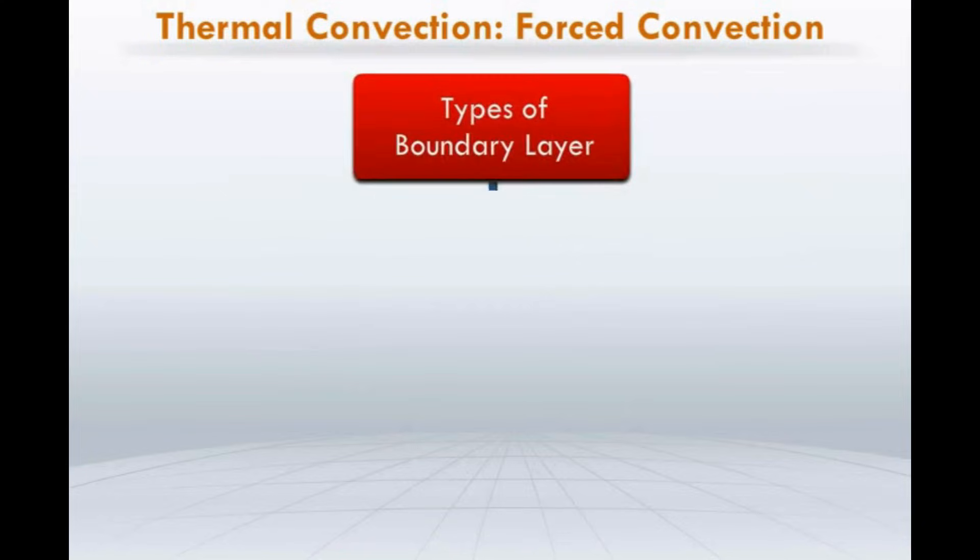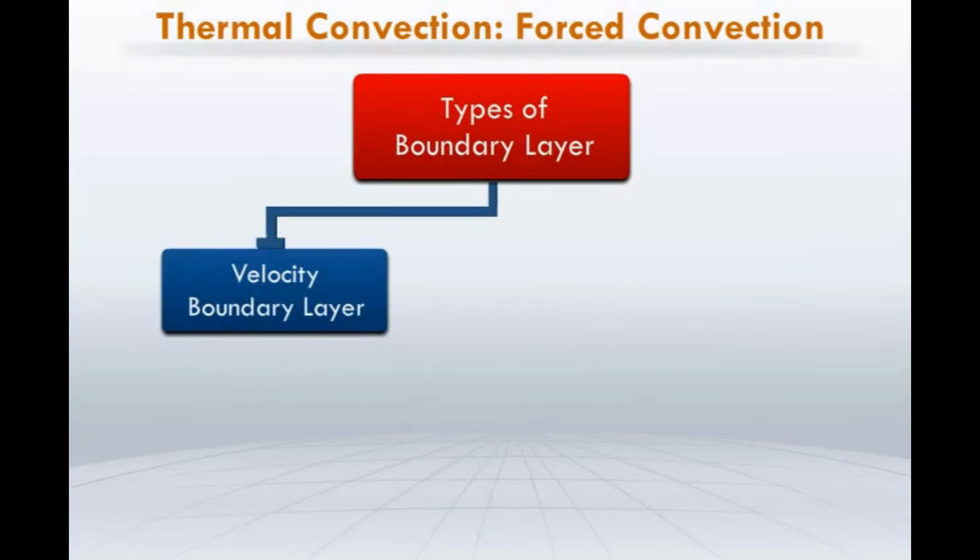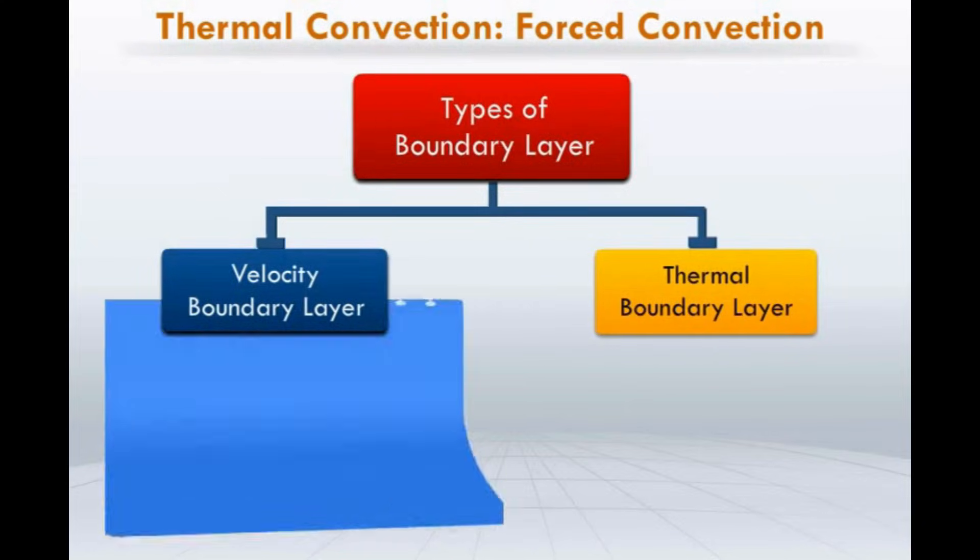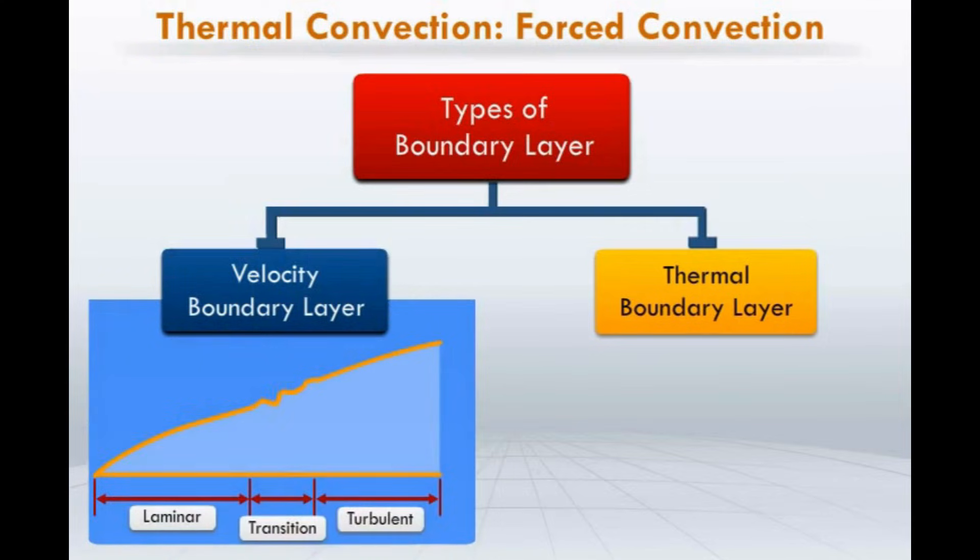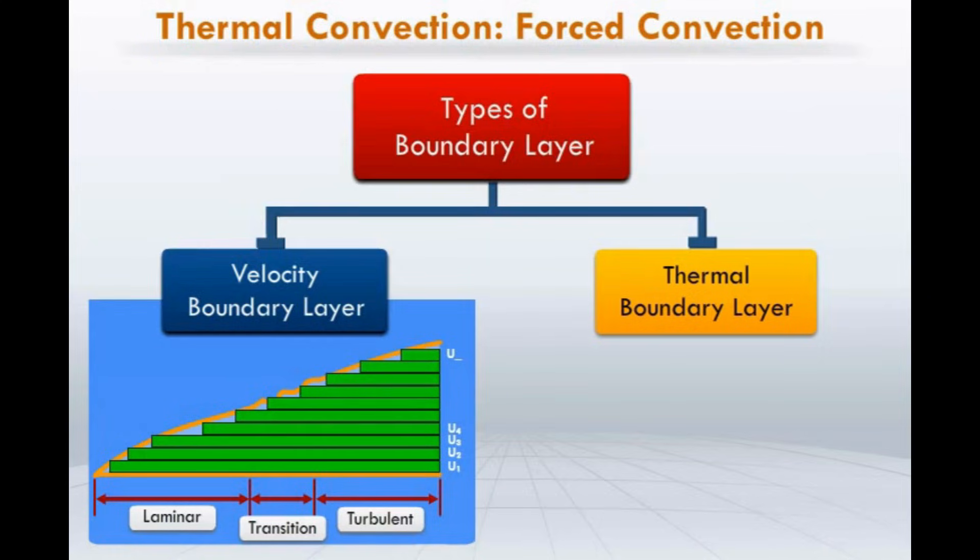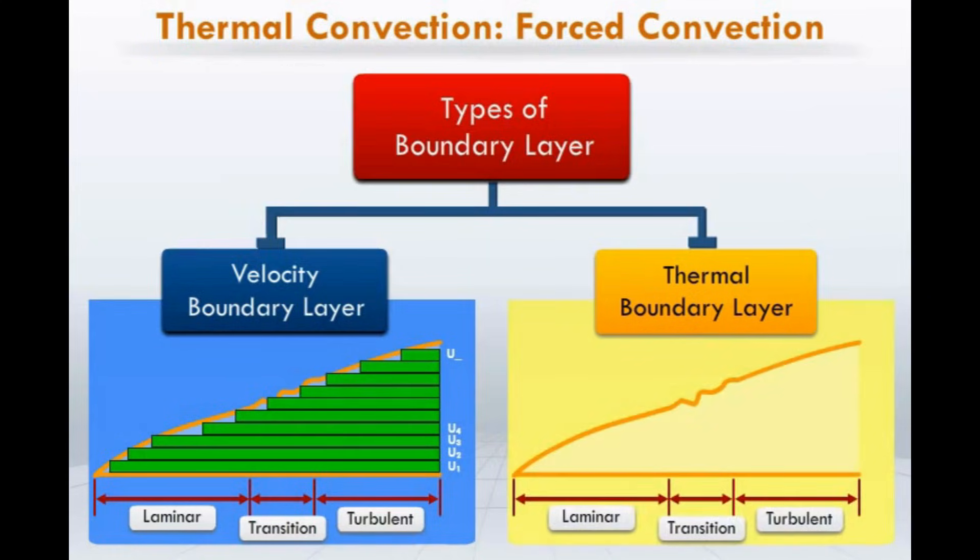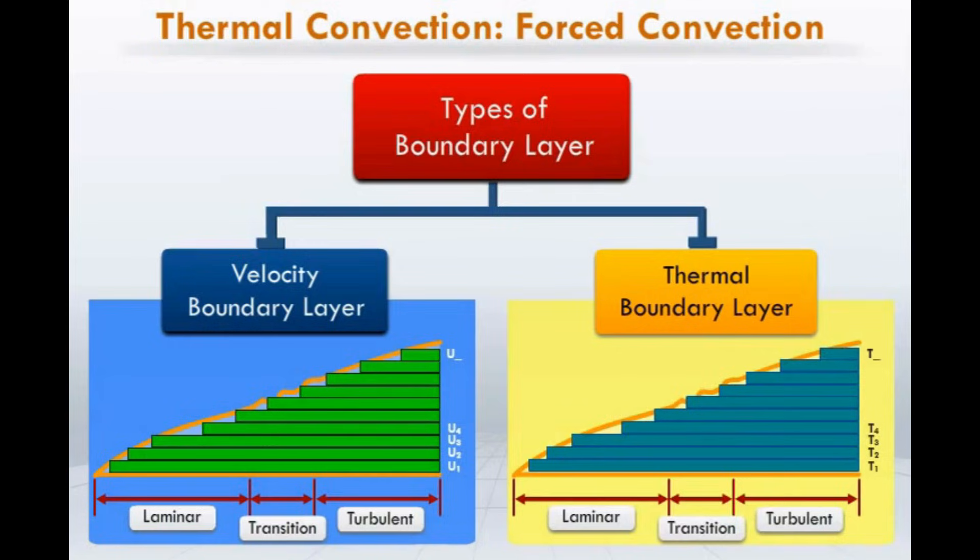The boundary layer is classified as velocity boundary layer and thermal boundary layer. In the velocity boundary layer, velocity of the different layers of fluid varies along the direction normal to the surface. In the thermal boundary layer, temperature of the different layers of fluid varies along the direction normal to the surface.